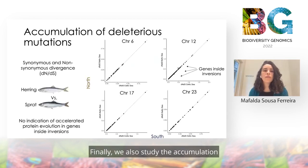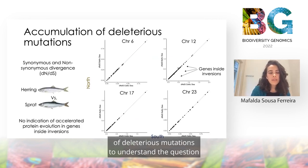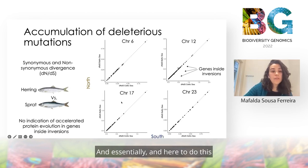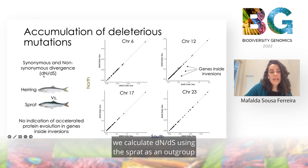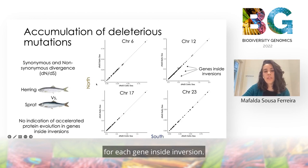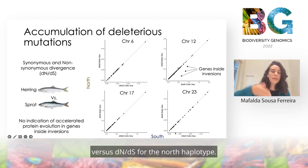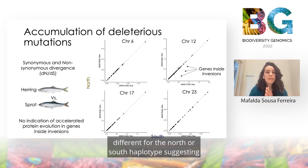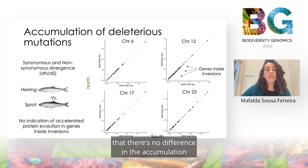We also studied the accumulation of deleterious mutations to understand the question of mutational load accumulation in these inversions. To do this, we calculated dN/dS using the Sprat as an outgroup for each gene residing in each inversion, plotting dN/dS in the South versus dN/dS for the North haplotype. What we find is no indication that dN/dS is different for the North or South haplotype, suggesting there is no difference in the accumulation of deleterious mutations.